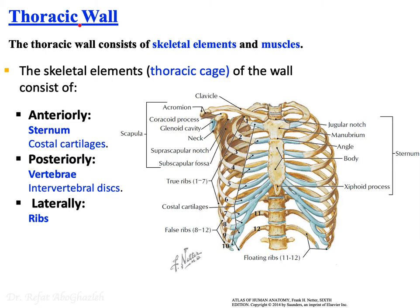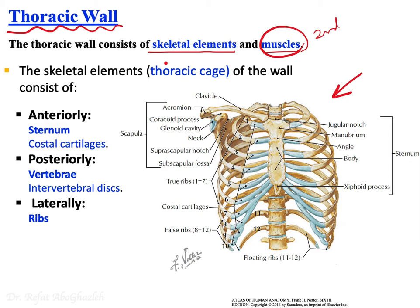When you say thoracic wall, you are indicating two parts: skeletal elements and muscles. What you see in this figure is the skeletal element of the thoracic wall — the muscles will be covered in the second part of the lecture. The thoracic cage is the skeletal element of the thoracic wall, and we can summarize its borders from this figure.